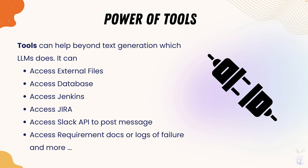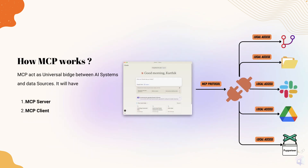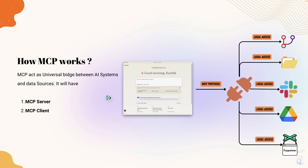This is exactly what I showed you with MCP — the MCP server acts as a protocol to access external file systems like local Git access, files, Slack, Puppeteer, Playwright, and Google Drive. You can access any of these with the power of the MCP protocol and tooling support. That's what the tooling does in reality, and I demonstrated this in the first section of this course.